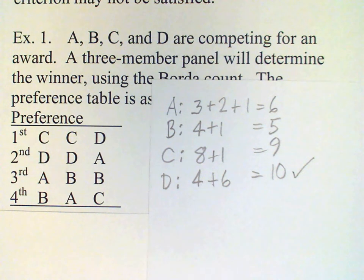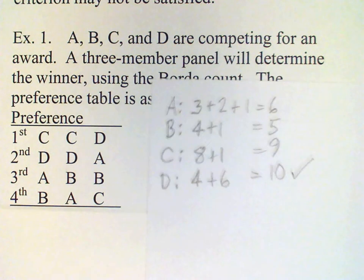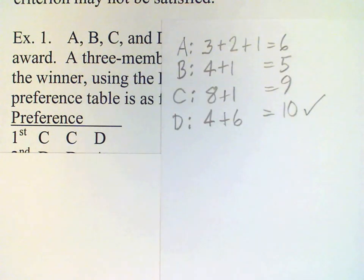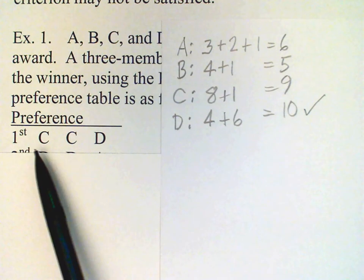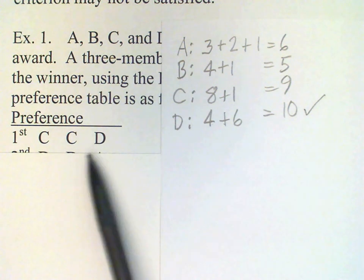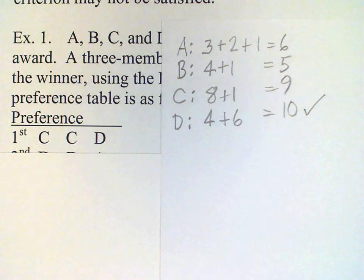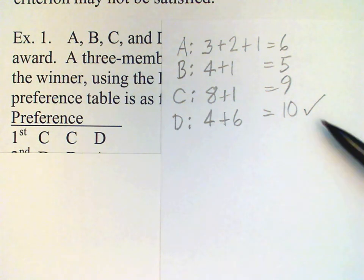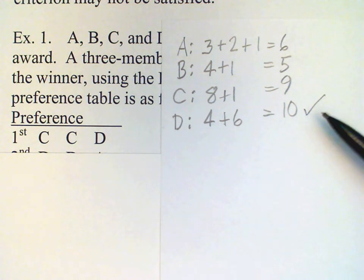But take a look at just the top row, where you find the 1st preference votes. We see that not only does C have a majority, but it's actually ranked 1st overall. That is, C had been ranked 1st, yet by the Borda count method, D wins. And so this shows that the majority criterion might not be satisfied under the Borda count method.